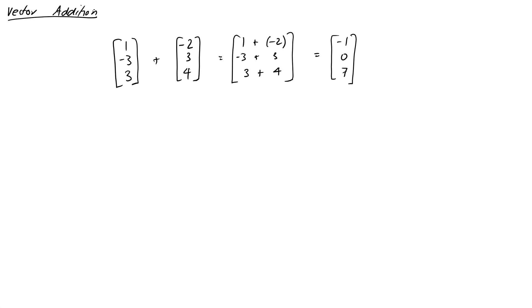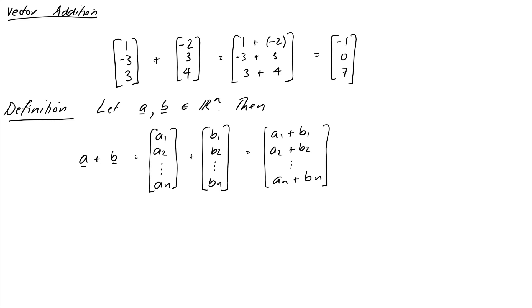Now we do like to define formulae in general, so we could write this slightly more formally as the following definition. We'll say let a and b be vectors in Rn, that's vectors with n elements. Then a plus b, which is a1, a2 through to an, plus b1, b2 through to bn, is simply equal to a1 plus b1, a2 plus b2, through to an plus bn. Notice that the definition starts by defining the things in question, for us the vectors a and b, then it gives the actual definition of how to do it.